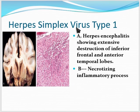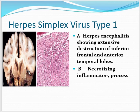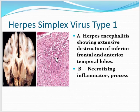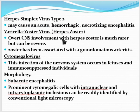Herpes simplex virus type 1 can cause herpes encephalitis, especially in immunocompromised patients or neonates, showing extensive destruction of the inferior frontal and anterior temporal lobes. Microscopically there is necrosis and inflammatory infiltrate of neutrophils or lymphocytes. Herpes simplex virus type 2 can cause acute hemorrhagic necrotizing encephalitis.